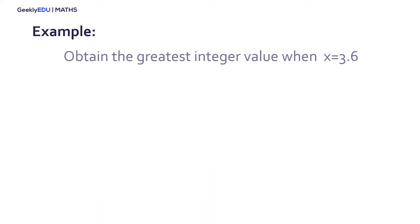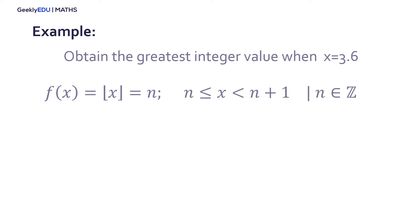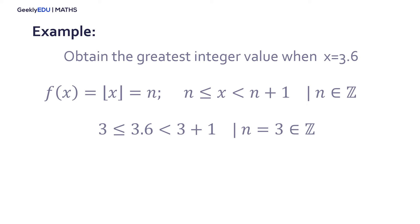Let's solve an example. Obtain the greatest integer value when x is equal to 3.6. We are going to use the formula, and first we use the right side of the formula, keeping in mind that n is always an integer. Since 3.6 is a number between 3 and 4, we substitute 3, 3.6, and 4 into the formula. We know that our greatest integer value is equal to n, and in this case n is 3. Therefore, the greatest integer value is 3 when x equals 3.6.